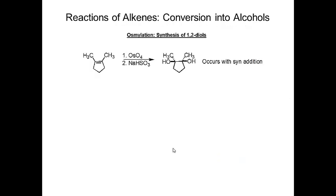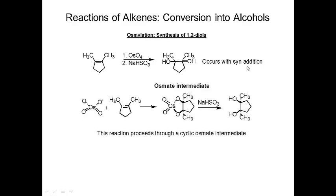Osmylation is another way to convert alkenes into alcohols. You treat an alkene with osmium tetroxide and sodium hydrogen sulfite in a two-step reaction. The product is a diol — two alcohol groups — and both are on the same side, which is the trademark of this reaction: OH always adds syn to the same face. An osmate intermediate forms in the first step, and then treatment with sodium hydrogen sulfite in the second step breaks up the intermediate to give the diol.